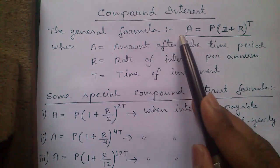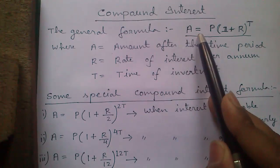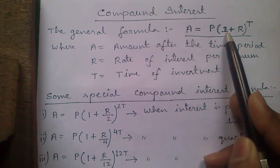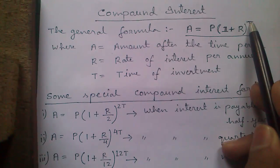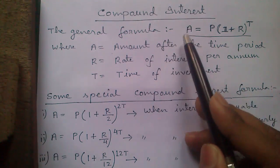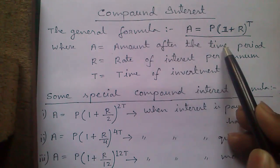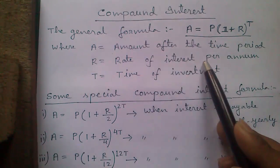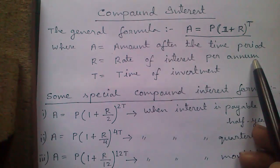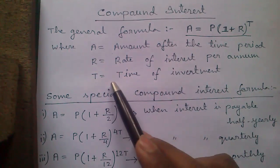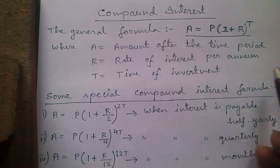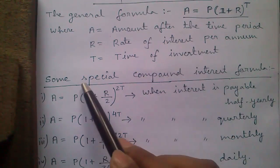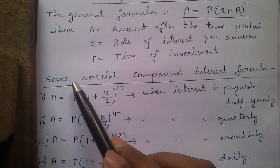The general formula for compound interest is A = P × (1 + R)^T, where A is the amount after the time period, R is the rate of interest per annum calculated yearly, and T is the time duration of investment. Here are some modified versions of the same formula for special cases.